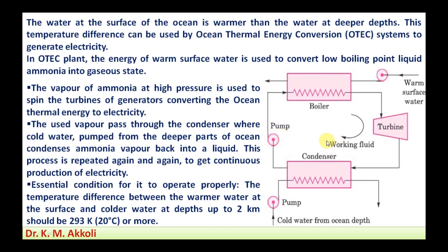The working of ocean thermal energy conversion is based on the principle that water at the surface of the ocean is warmer than water at deeper depths. In an OTEC plant, warm surface water converts low boiling point liquid ammonia into gaseous state. The ammonia vapor at high pressure spins the turbine of a generator, and the used vapor passes through a condenser where cold deep-ocean water condenses it back into a liquid, repeating continuously for electricity production.